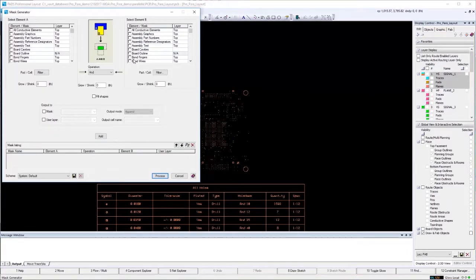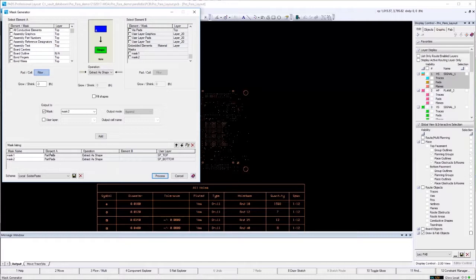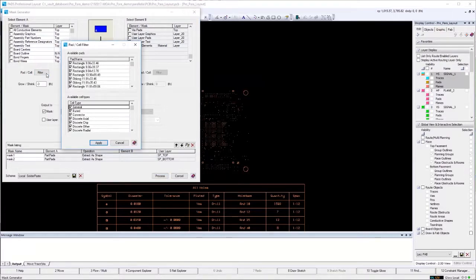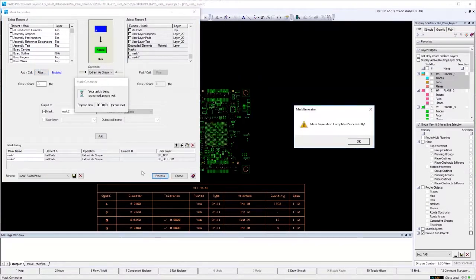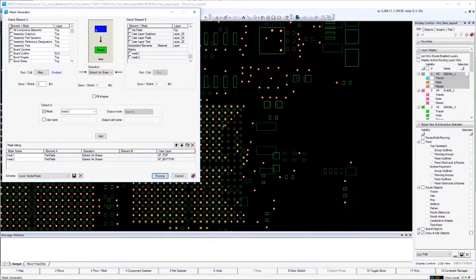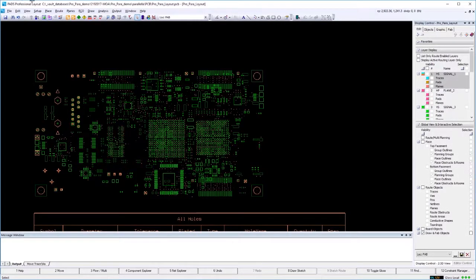You can filter by pad and cell by opening up the filter dialog. We'll disable a few cell types such as axial discretes and the two oblong pads belonging to a connector. Click apply and then process. Let's close the mask generator and view the output. With the fab scheme selected, you can view the generated mask in green. The mask is applied to user layers SPTOP and SPBOTTOM that were specified in the mask generator.